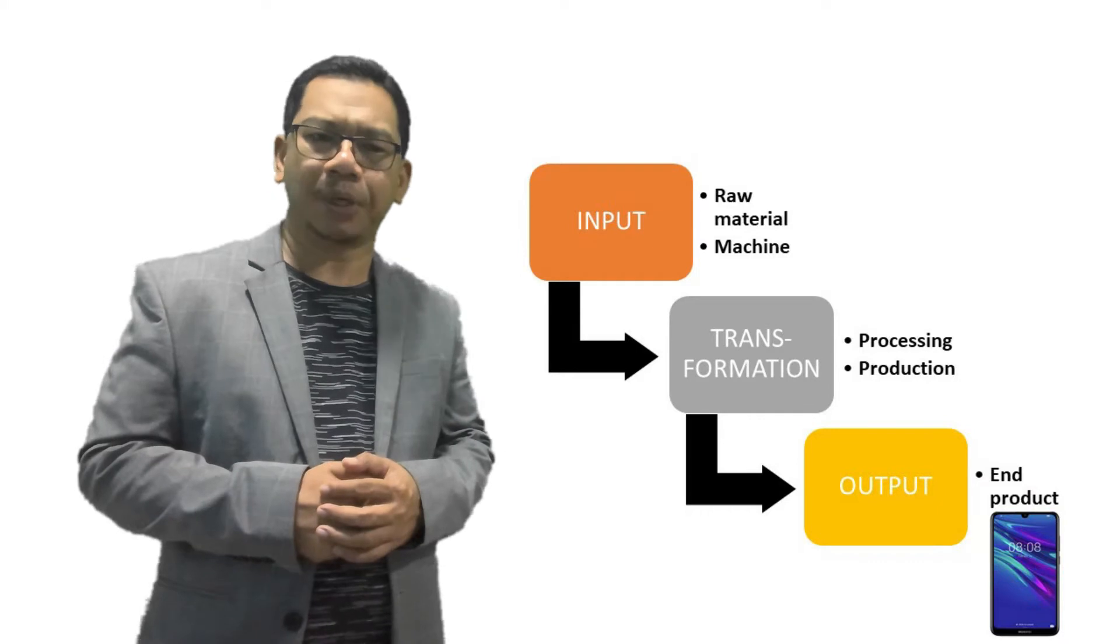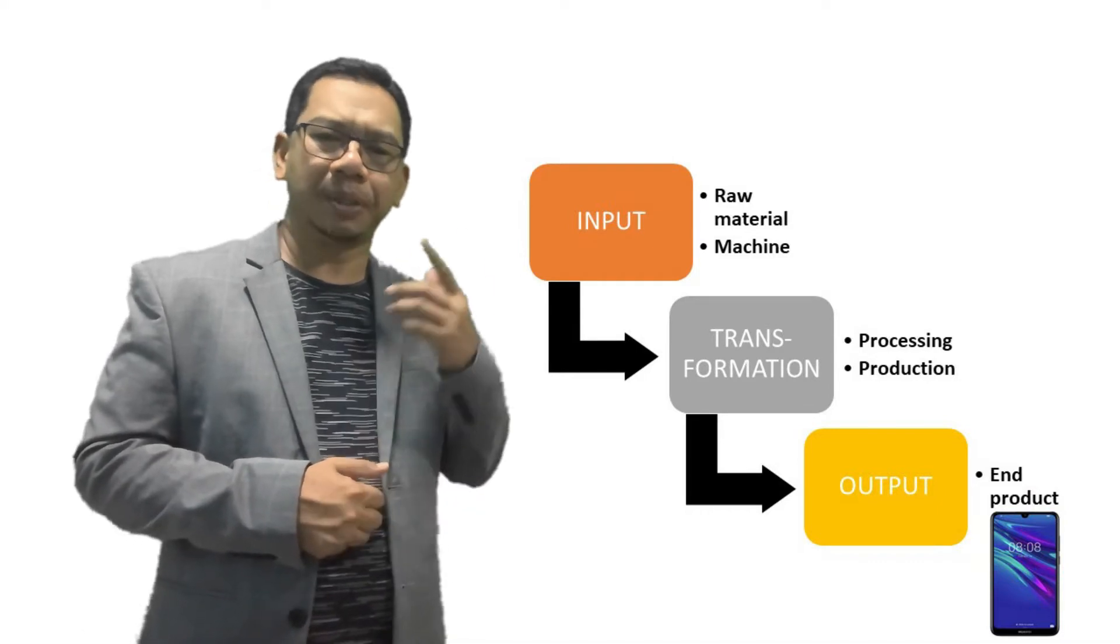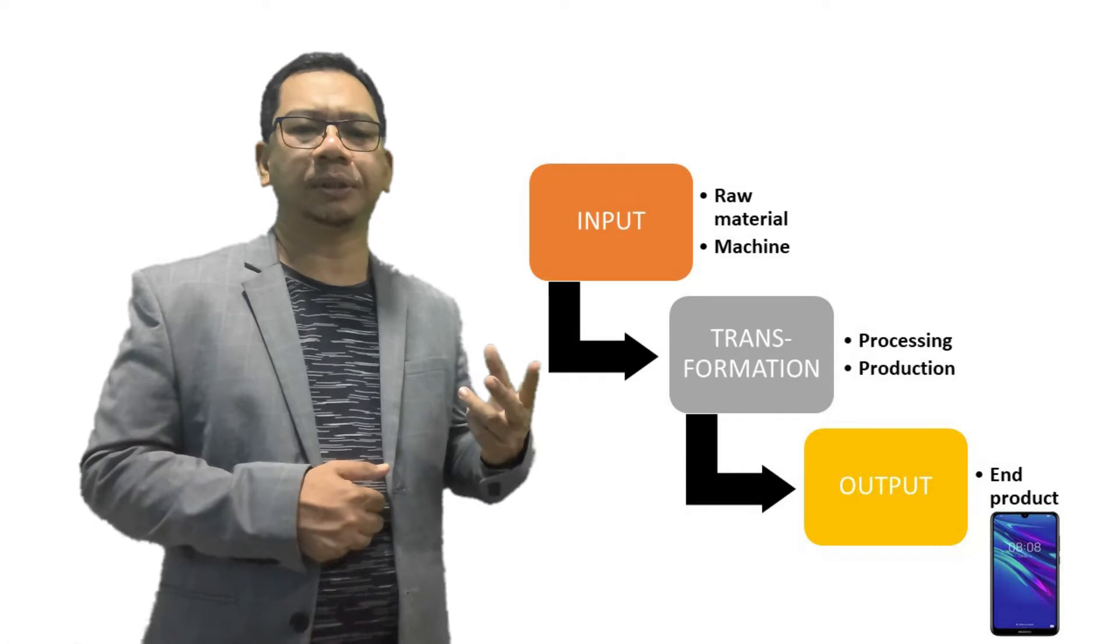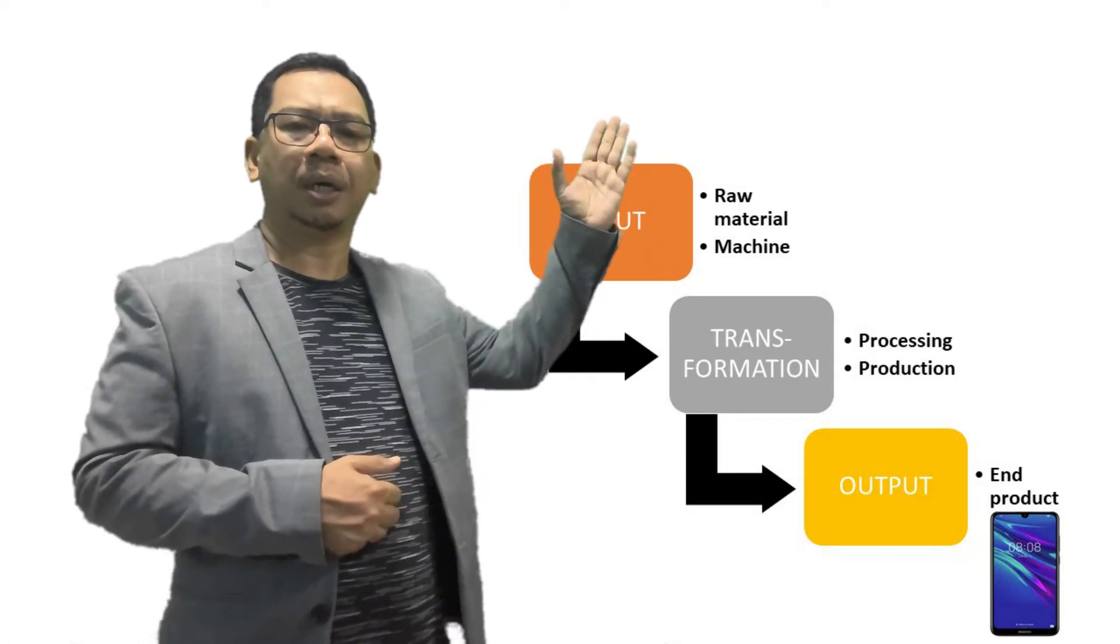So, in operation, the raw material, machines, and workers are basically the inputs.